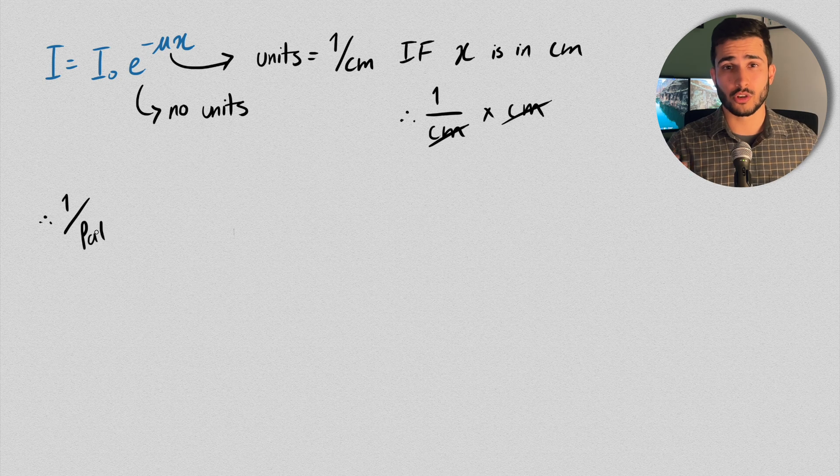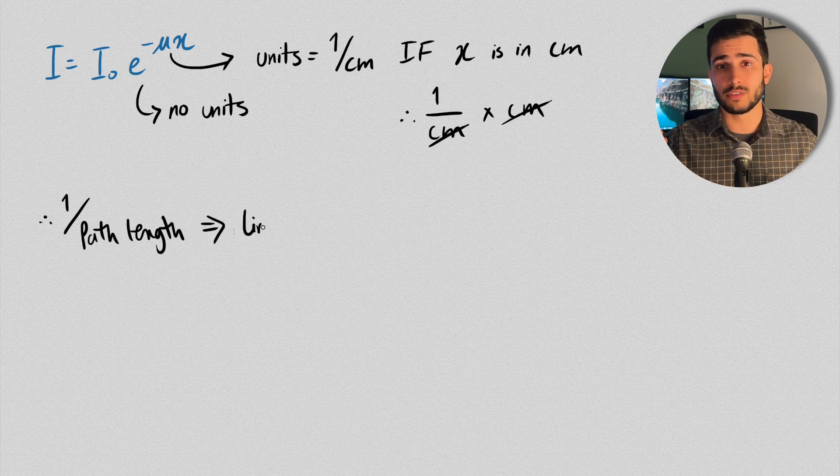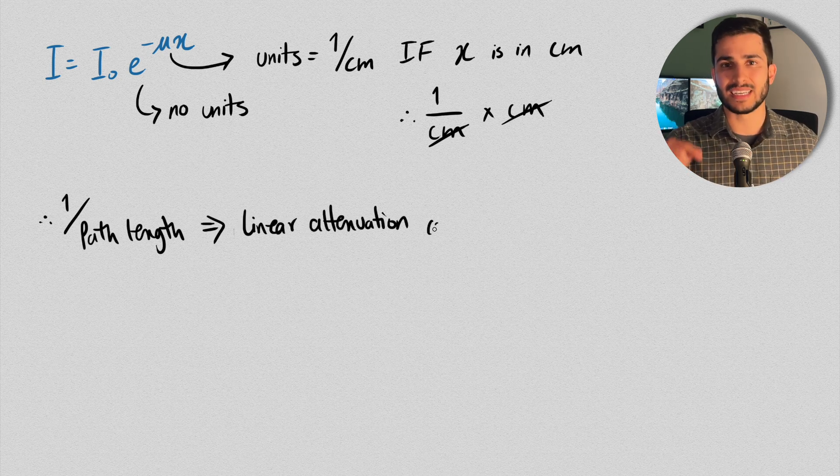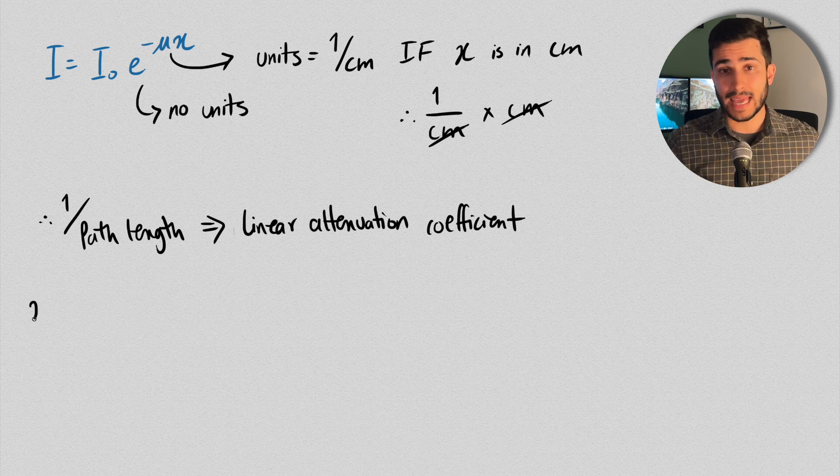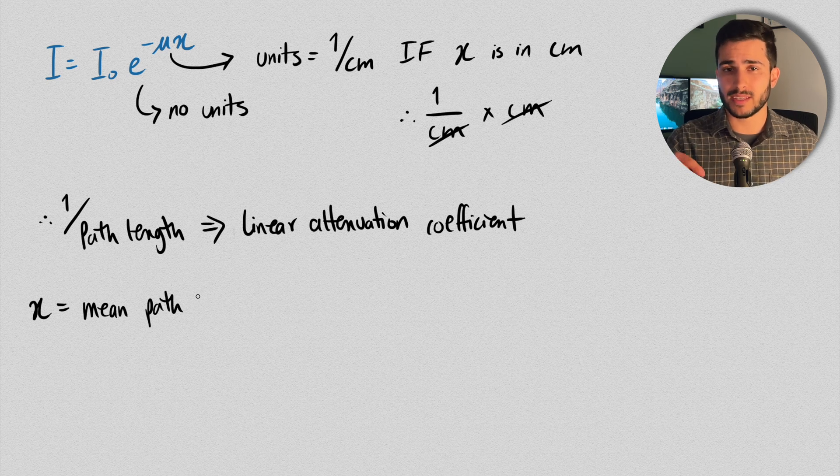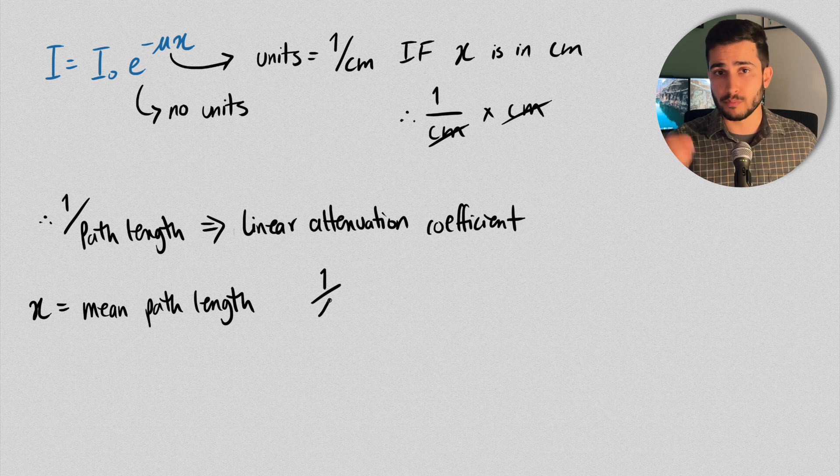So that way, the units cancel out, and you're just left with a pure number, that is the number of photons. And so an attenuation coefficient with the units of 1 over some length is called the linear attenuation coefficient.